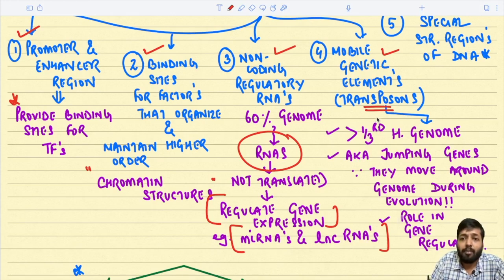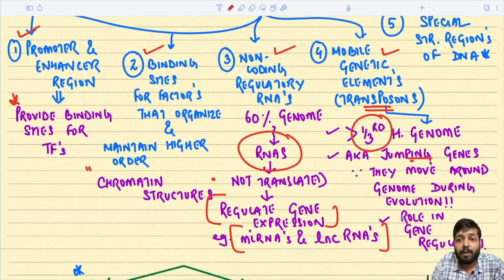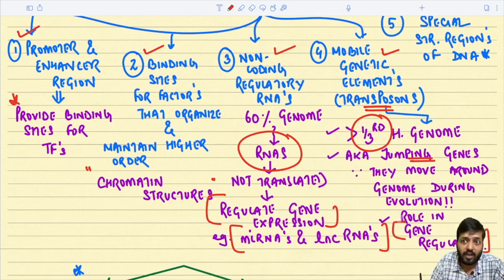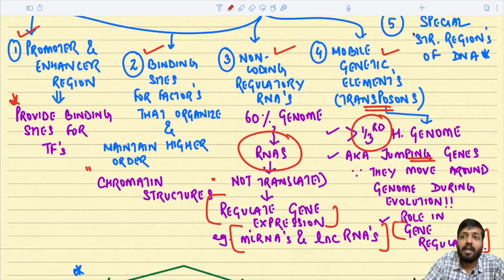Mobile genetic elements — the transposons — comprise more than one-third of the human genome. They are also known as jumping genes because they move around the genome during evolution, and they are supposed to have a role in gene regulation.